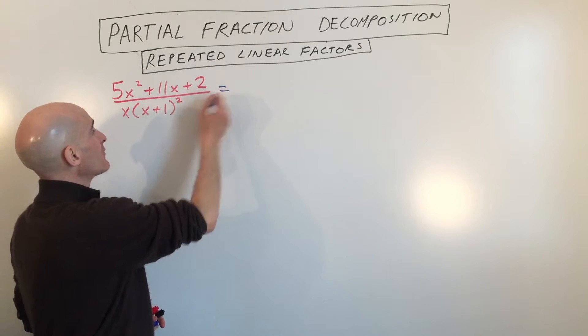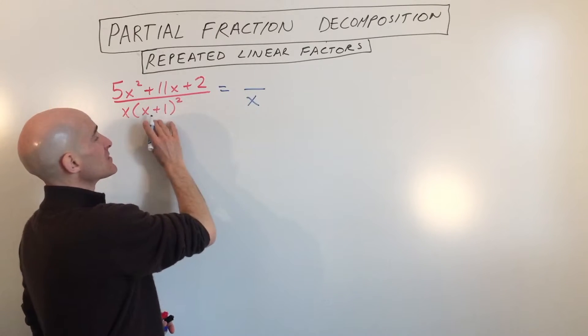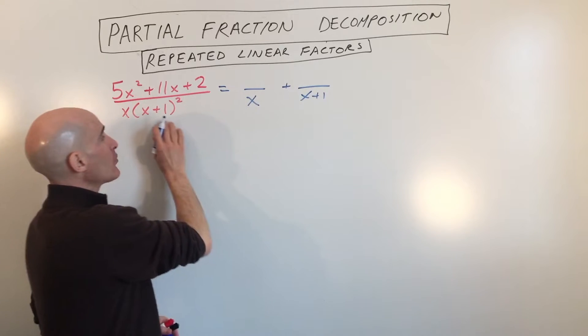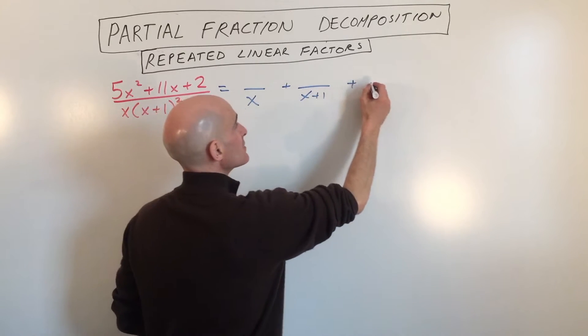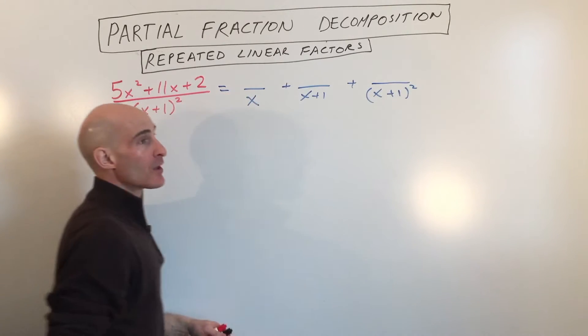So what we're going to do is we already have the denominator factored, so it's going to be x. This is going to be x plus 1, and then we want to do x plus 1 squared.